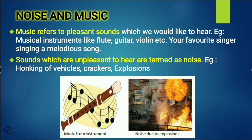Sound which is good to hear — pleasant sound — is called music. The opposite of this is noise, which is unpleasant sound, unpleasant to hear. For example, honking of vehicles and cracker explosions are termed as noise. Can you choose from the pictures: which is an example of music, and which is an example of noise?